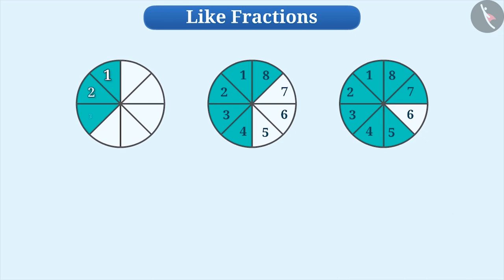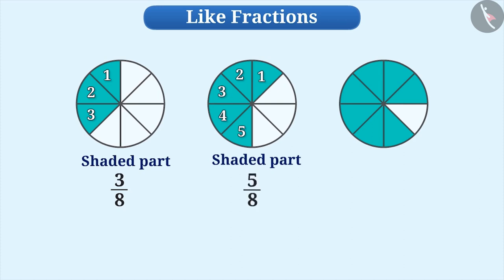All of these are divided into 8 equal parts. Since 3 out of 8 parts are shaded in the first figure, therefore, the fraction of shaded parts can be represented as 3 by 8. Similarly, the shaded parts in the second figure is 5 by 8 and the shaded parts in the third figure is 7 by 8.